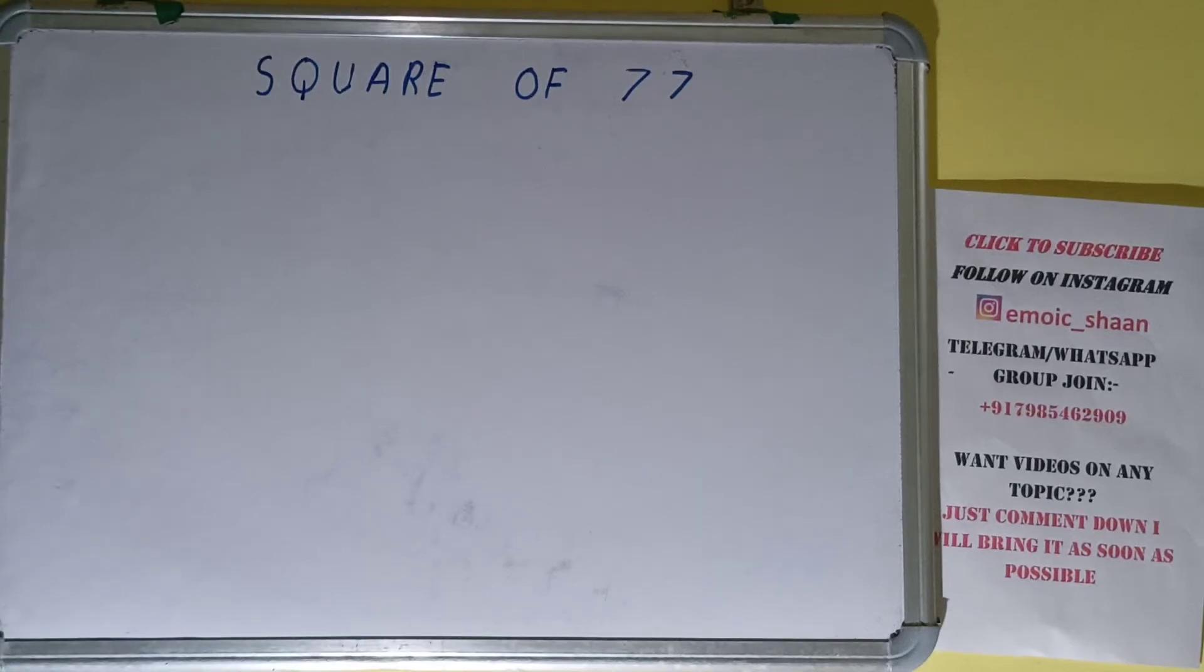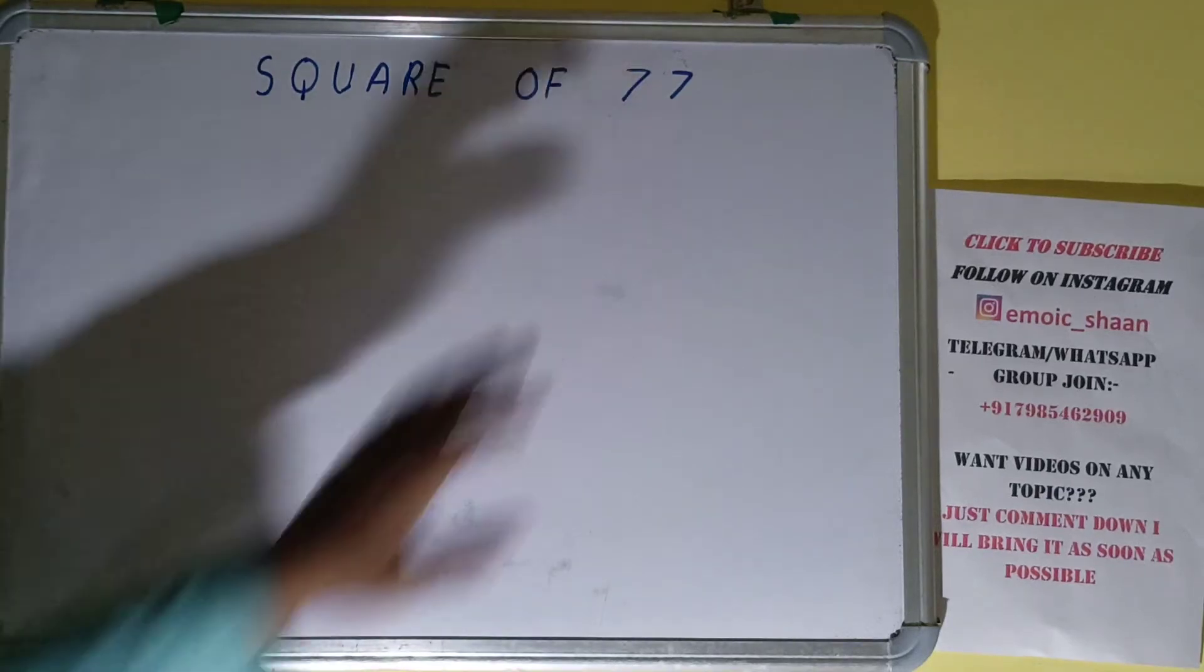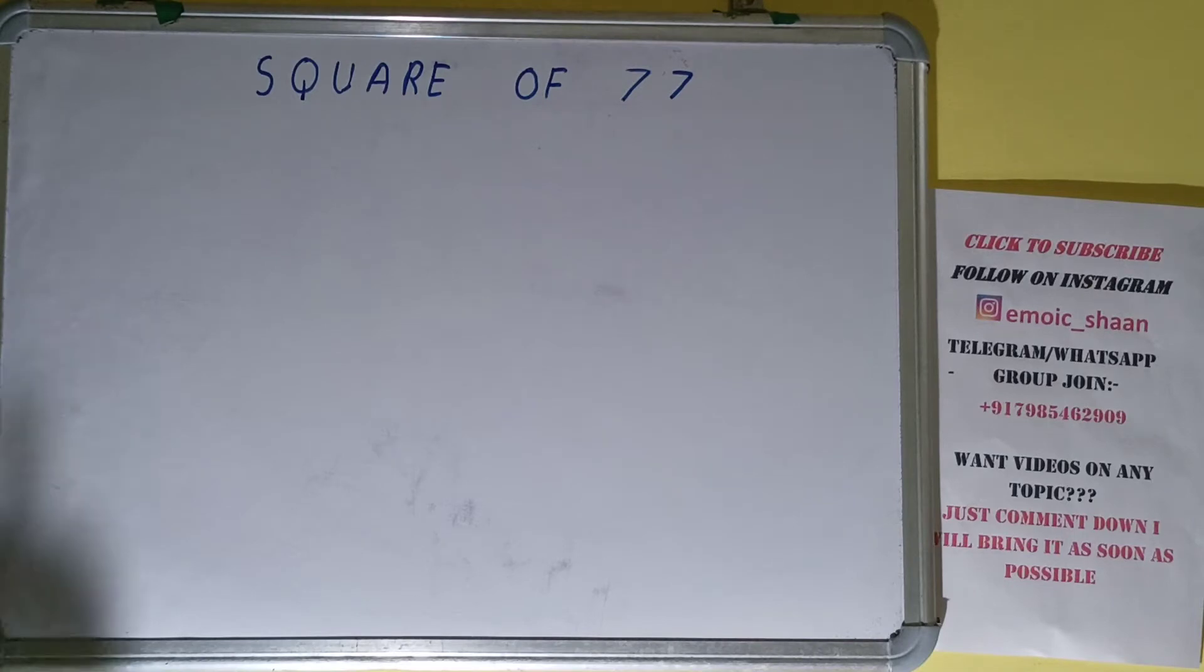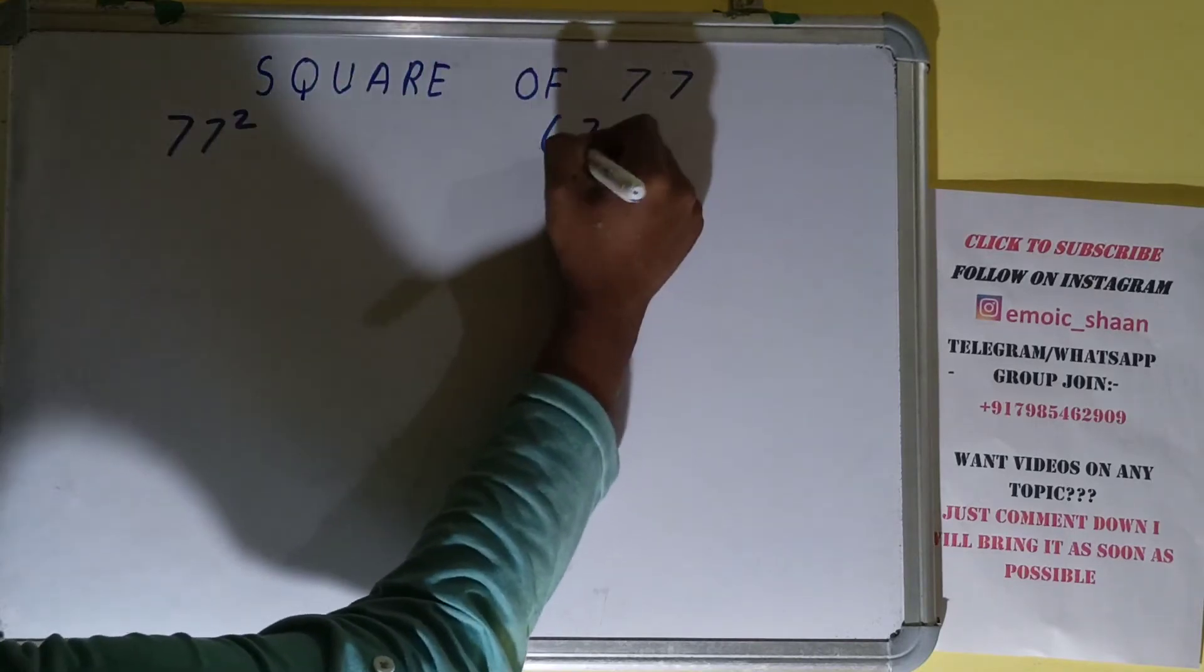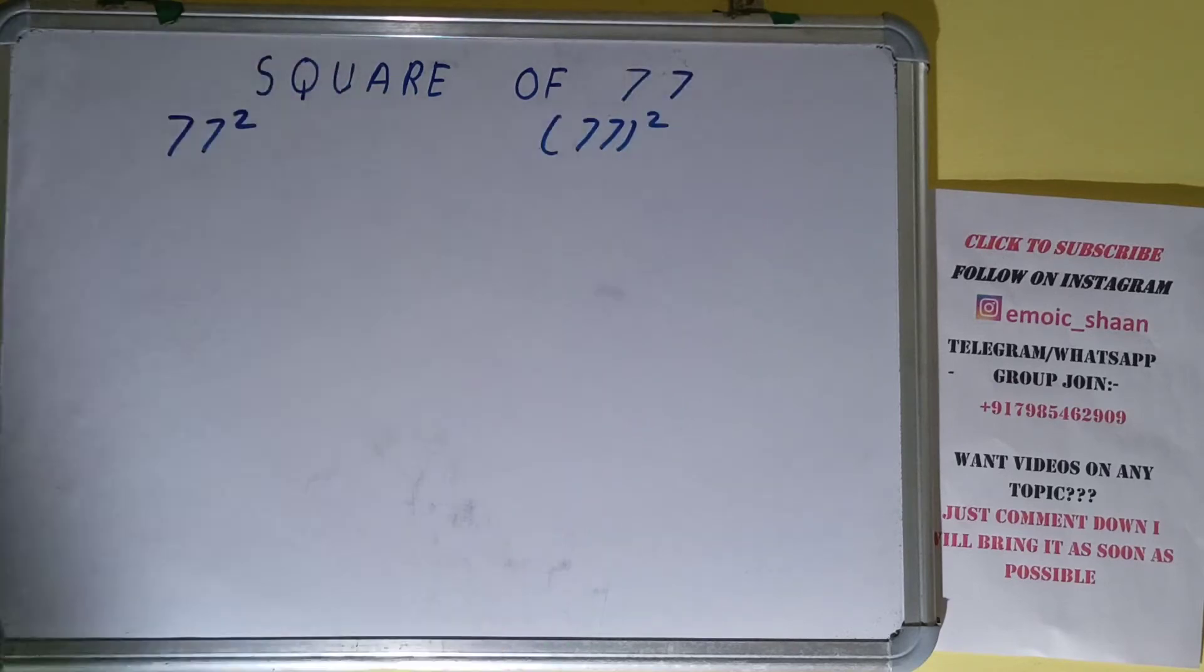Hello friends, and in this video I'll be helping you with the square of the number 77. So let's start. Square of 77 can also be written as 77 to the power 2 or inside bracket 77 outside 2. These all have one and the same meaning, that is you need to find out the square of 77.